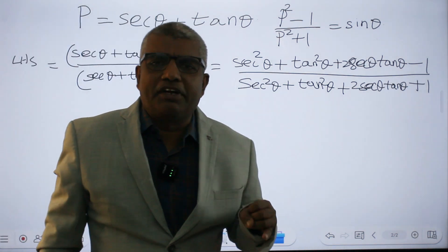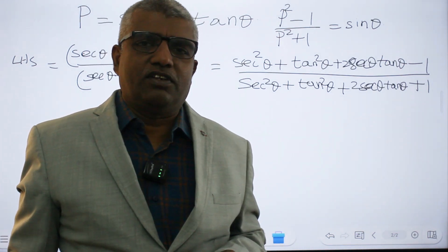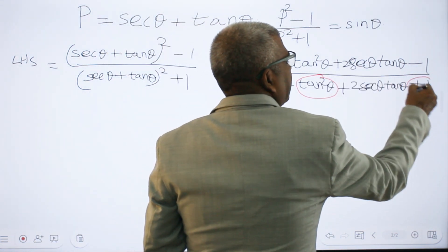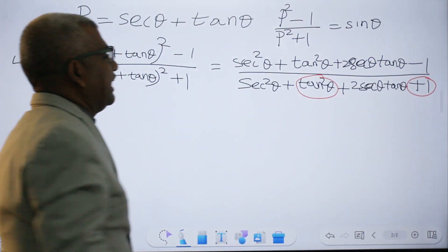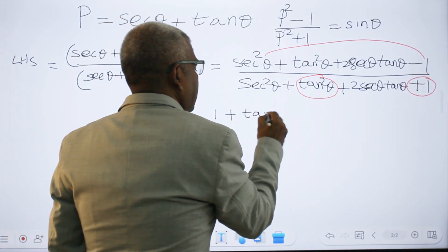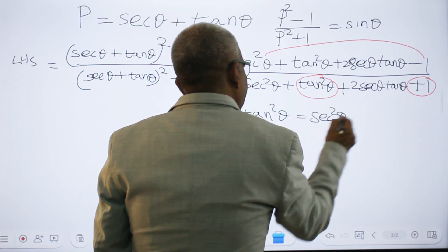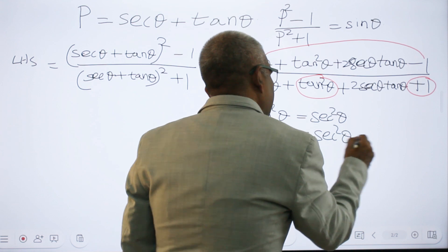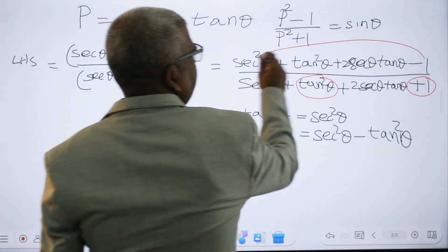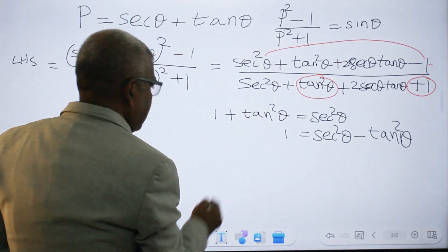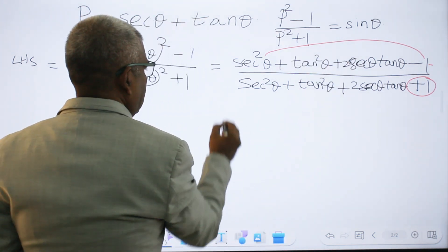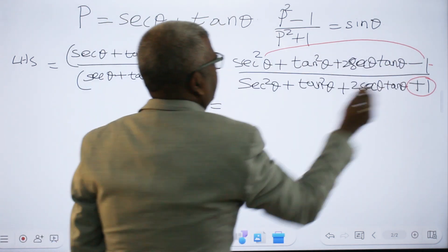We use the trigonometric identity: 1 plus tan squared θ equals secant squared θ. From this, secant squared θ minus tan squared θ equals 1, and therefore secant squared θ minus 1 equals tan squared θ.